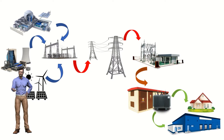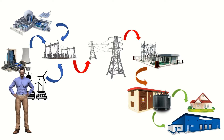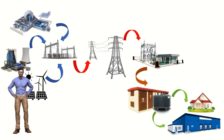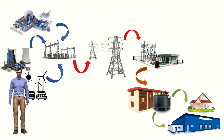Given that the voltage used in transmission networks can reach up to 400,000 volts, this implies that there must be several stages to reduce this voltage to that of use. This is achieved in a first step in the substations and finally in the transformation centers that we can see in our neighborhoods or industrial areas.